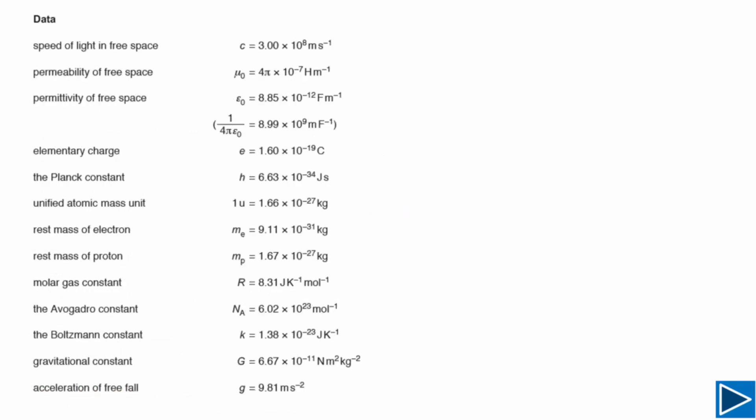On the second page of your exam paper, some constants and their values are given. These are very important because you will need them for some calculations in your exam. If you remember them, wonderful. If you can't, simply come back to the second page to find the values. Let me highlight the constants you need for AS Physics.